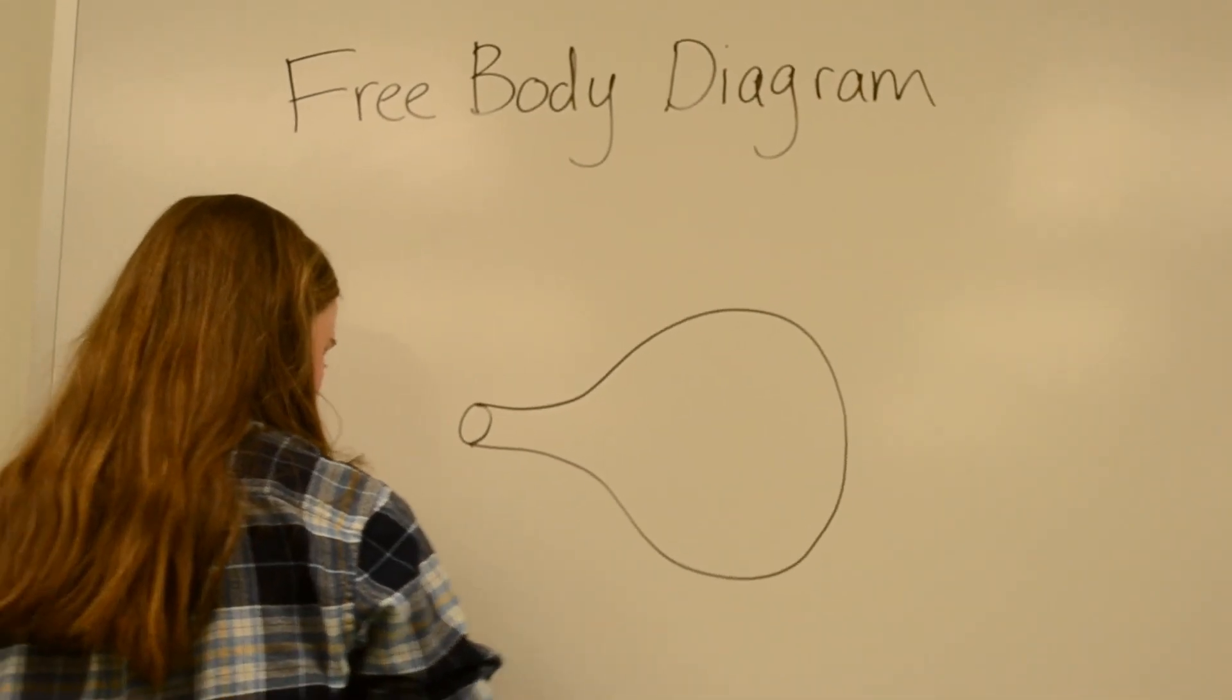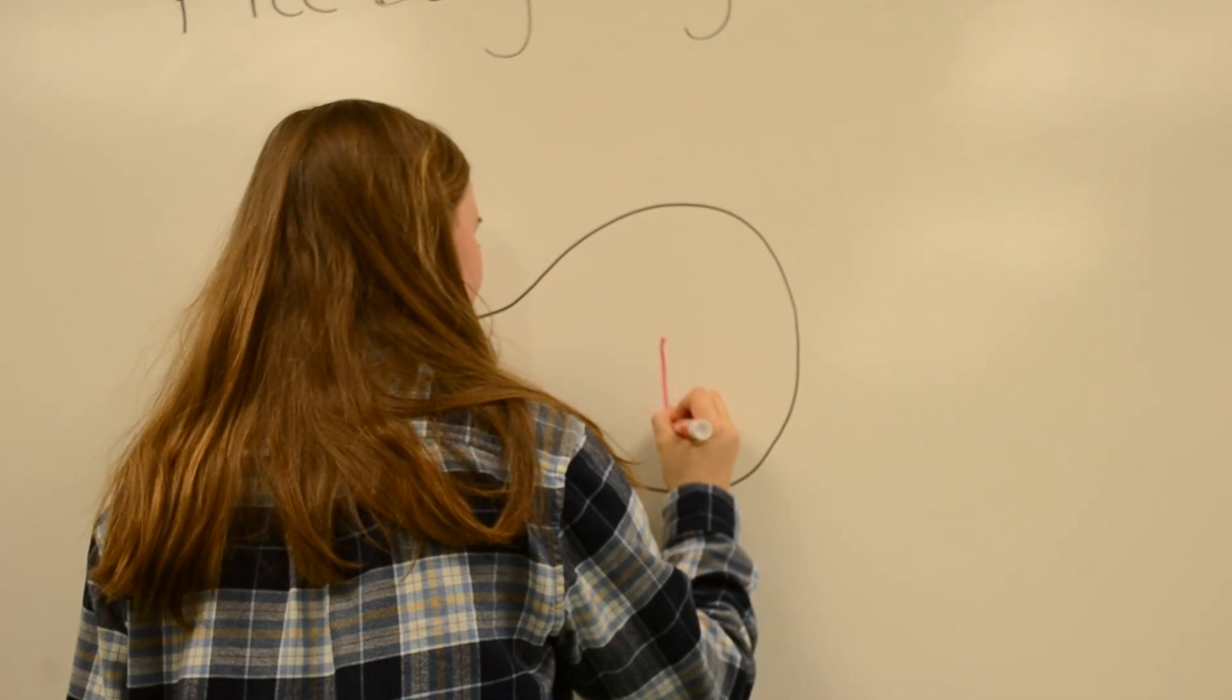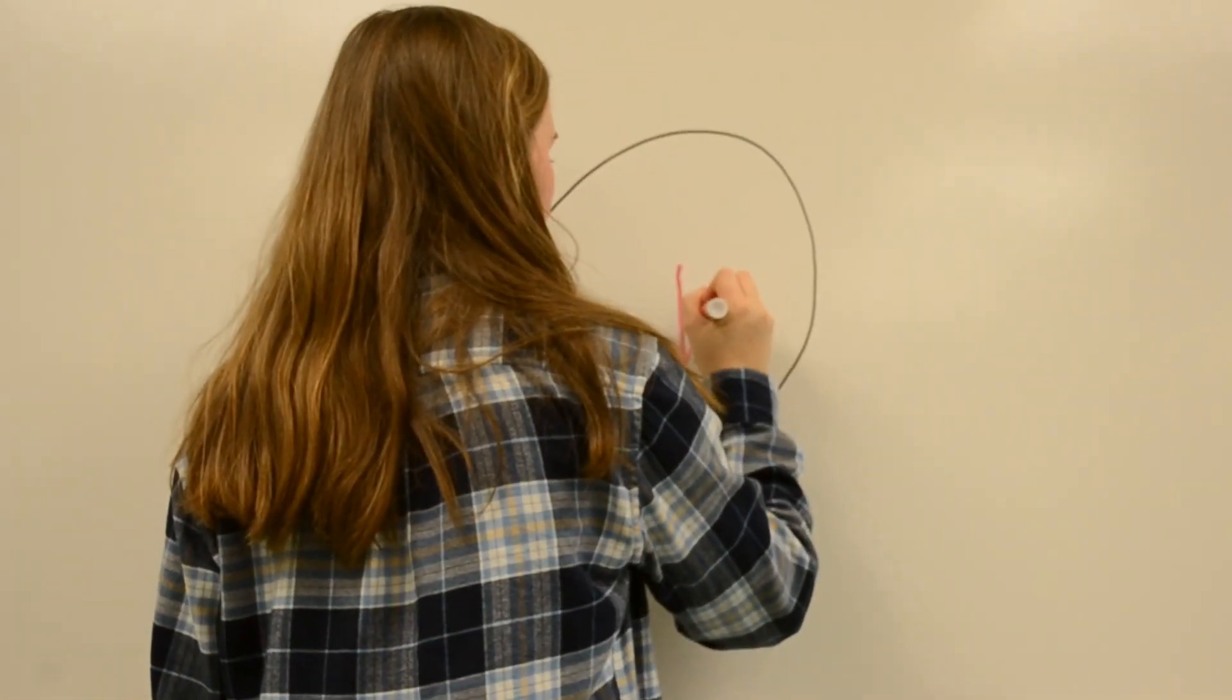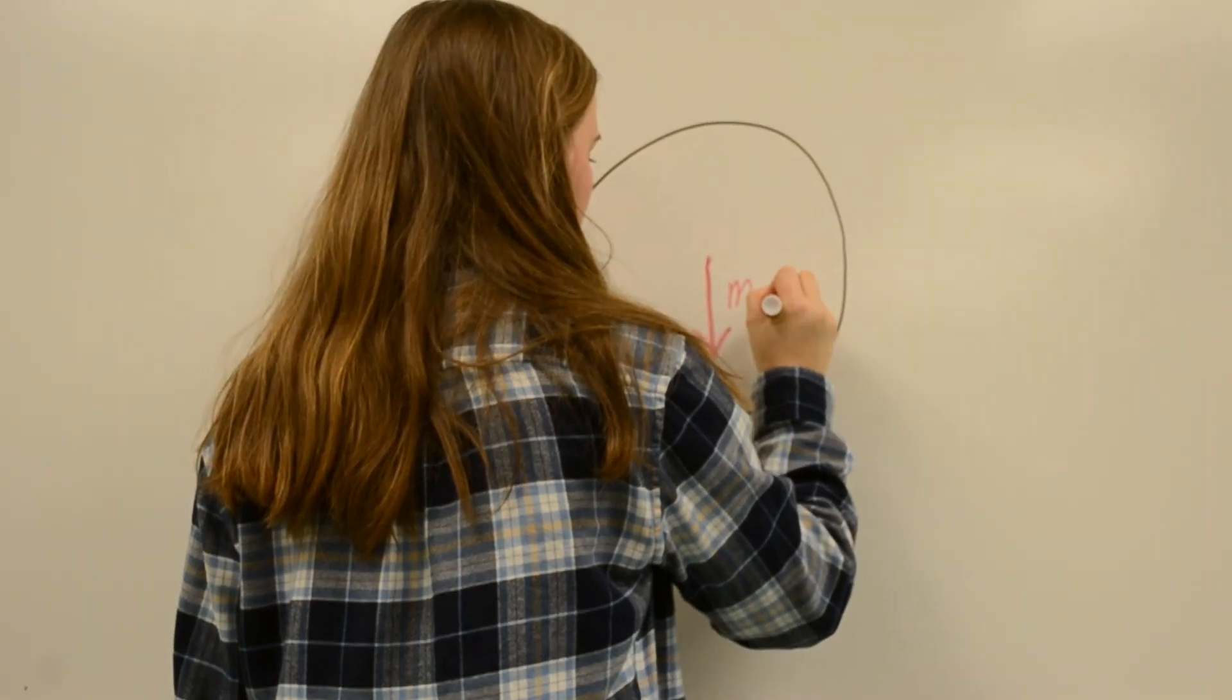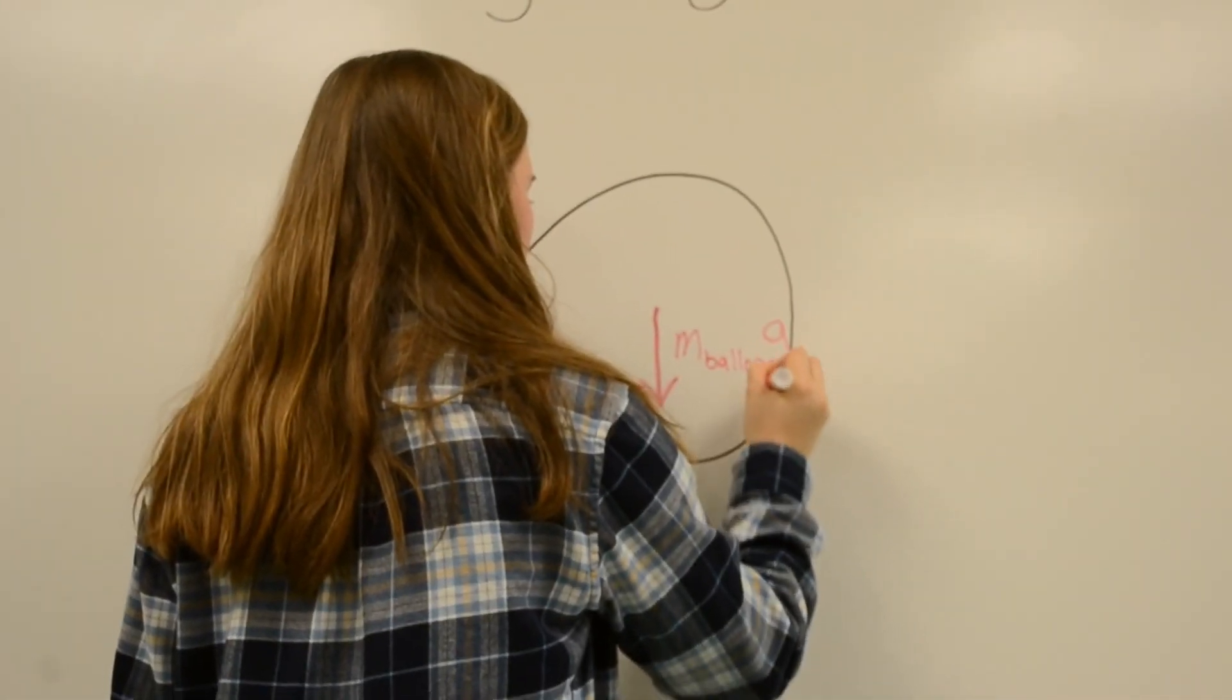In our example, for the sake of our analysis, we are neglecting air resistance and friction. We will draw the bodies that are going to be in motion. Here we draw the air balloon system. Next, we will draw the forces that are acting on these bodies.